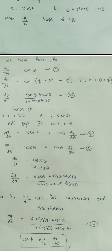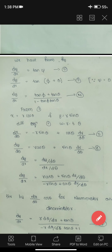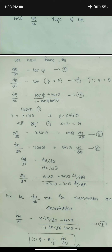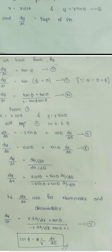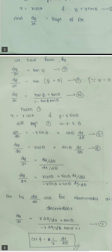dy by dx equals dy by d theta divided by dx by d theta. Substituting equations 5 and 6 and dividing numerator and denominator by cos theta, we get: dy by dx equals (r d theta by dr plus tan theta) divided by (1 minus r d theta by dr times tan theta). Take it as equation 7. Therefore tan ψ equals r d theta by dr.